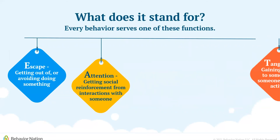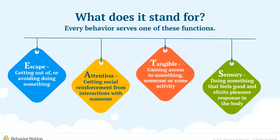There are four functions of behavior. First, escape or avoidance means the individual is trying to get out of or avoid doing something. Attention is receiving social reinforcement from interacting with others. Tangibles are all about gaining access to something. Lastly, sensory or automatic means the individual is engaging in the behavior because it feels good. We have a separate video that dives deeper into the functions of behavior — click the link in the description to watch that video.